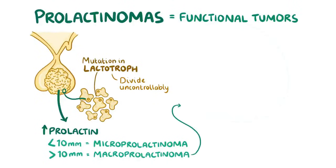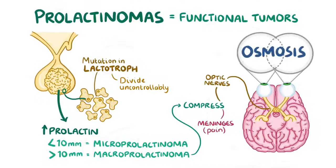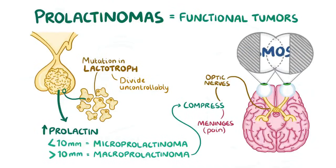Now, macroprolactinomas can compress surrounding structures, like the meninges, which is the protective layer overlaying the brain that typically causes pain when it's stretched. Also, an enlarged pituitary gland can compress the optic nerves as they cross at the optic chiasm. This can cause vision problems, as it affects a person's ability to view things that are in the temporal, or outermost portion, of the visual fields in both eyes. And this is called bitemporal hemianopia.